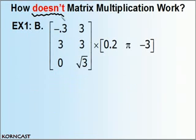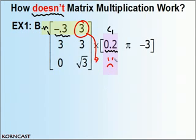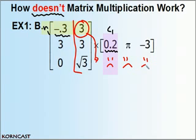To further illustrate this — how doesn't matrix multiplication work? We're multiplying rows times columns. In this scenario, row 1 times column 1: the first element negative 0.3 can be multiplied to 0.2. But now, what do we multiply to this 3? There's nothing for it to multiply to — it doesn't have a dancing partner. Because the second matrix only has one row, not two, there's nothing for this column to multiply to, so we cannot multiply this. This problem cannot be done.